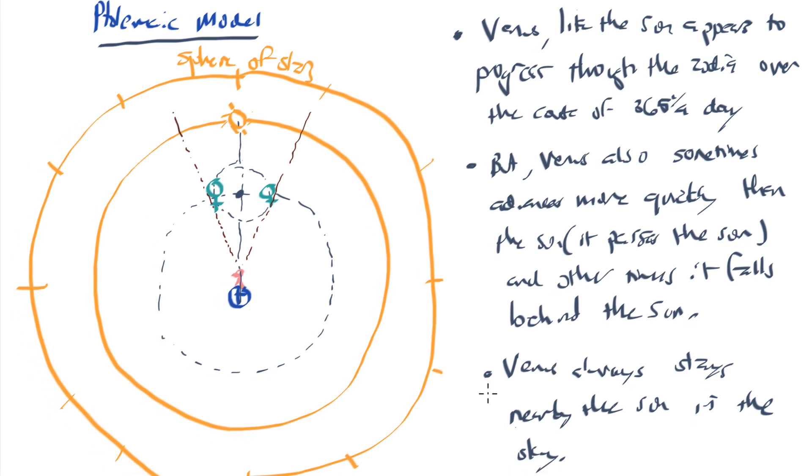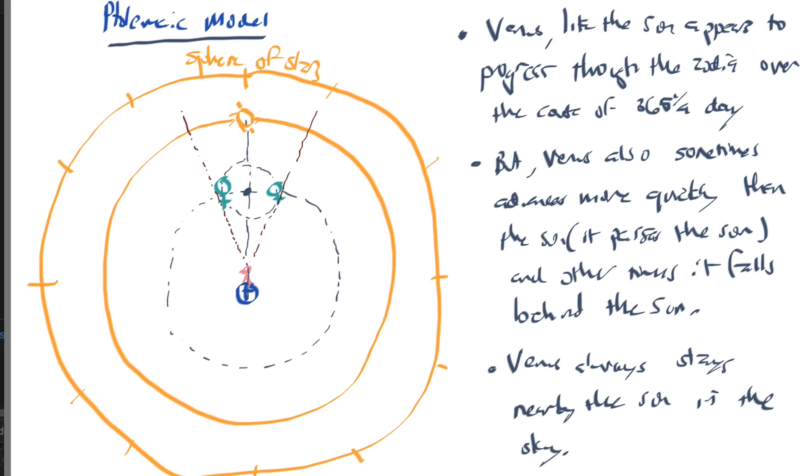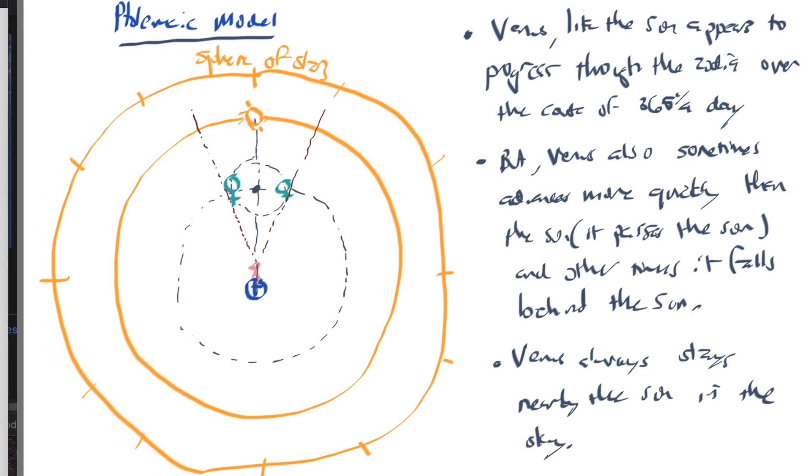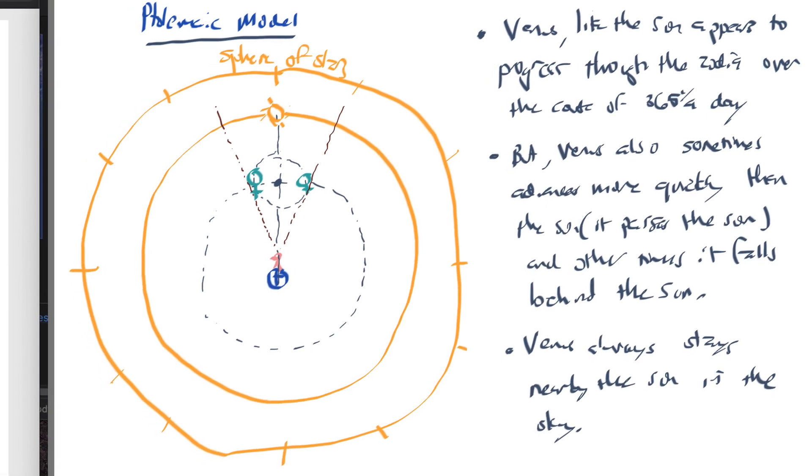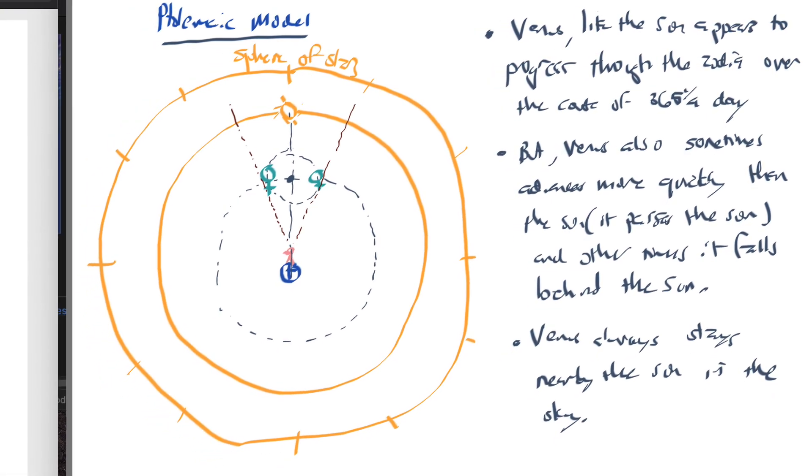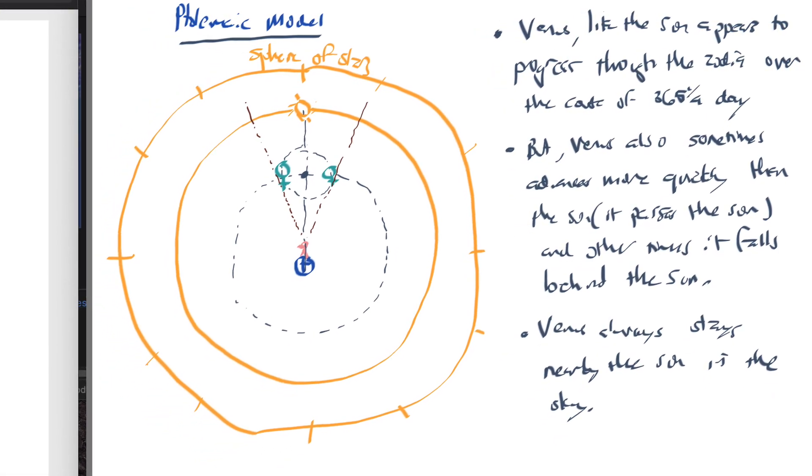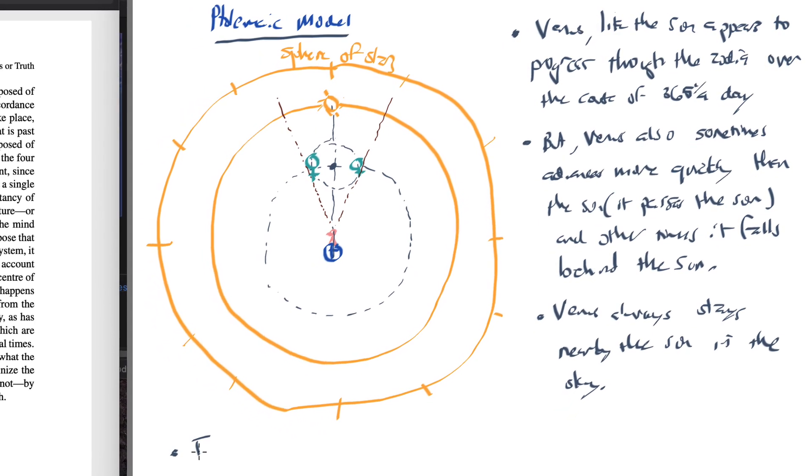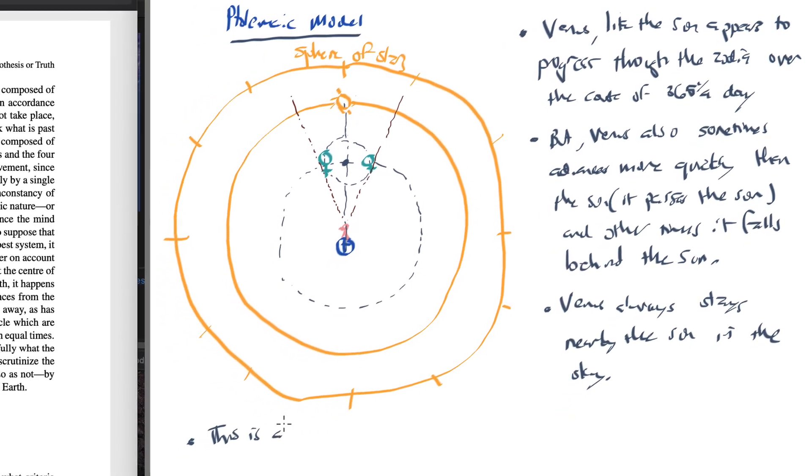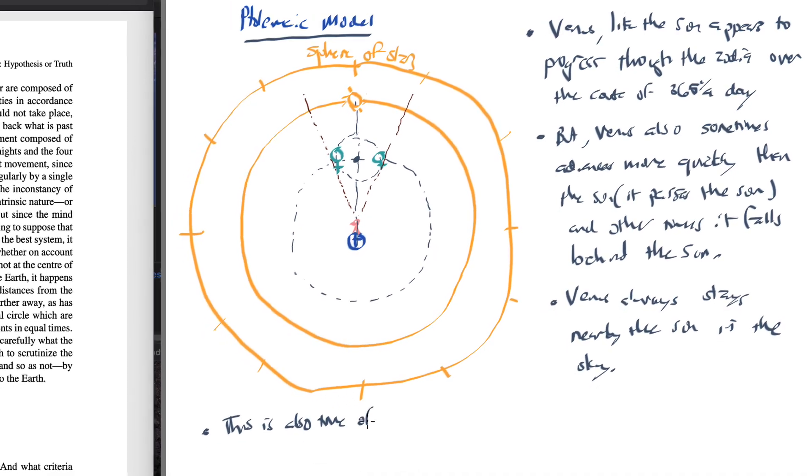And this, by the way, is also true of Mercury. Mercury always stays in the same vicinity of the sky as the sun. So Mercury and Venus exhibit the same kind of behavior. Now, it's also true, so maybe I'll just note that, this is also true of Mercury.